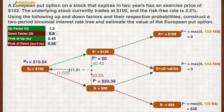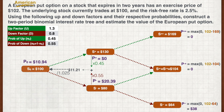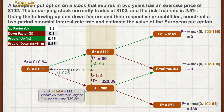Now, if it's an American put option instead, what should the value be? An American option may be exercised at the intermediate stage, so we determine if early exercise is of any value. Looking at the node where the spot price is 80 dollars, the put option can be exercised for 22 dollars, which is higher than the equivalent European option value. We replace this node with 22 dollars. Traversing backwards, the American option has a value of 11.80 dollars.